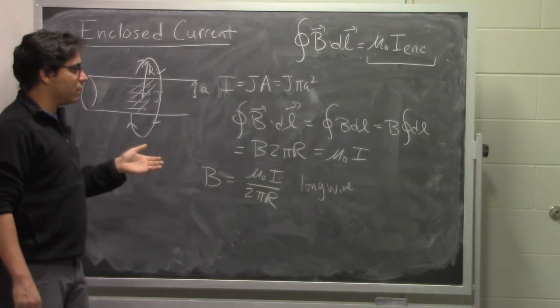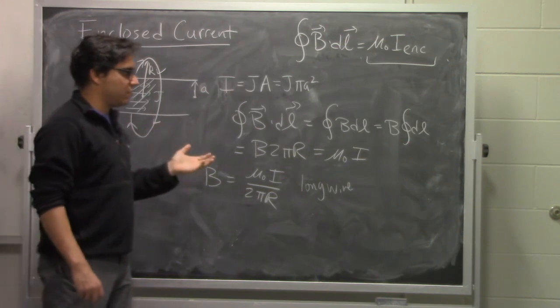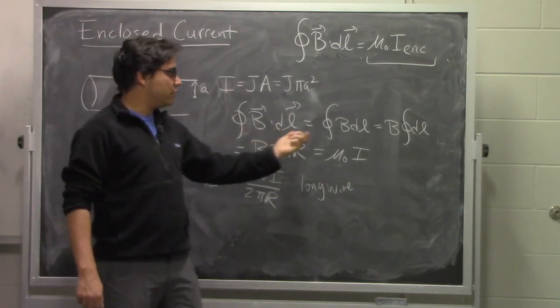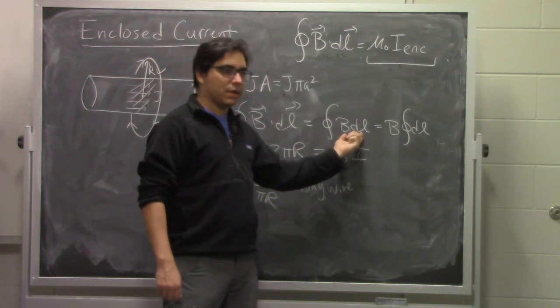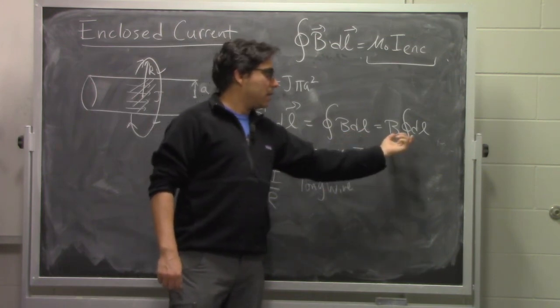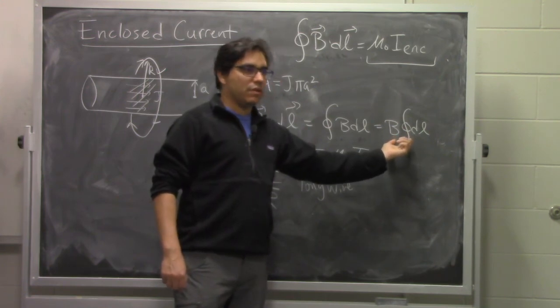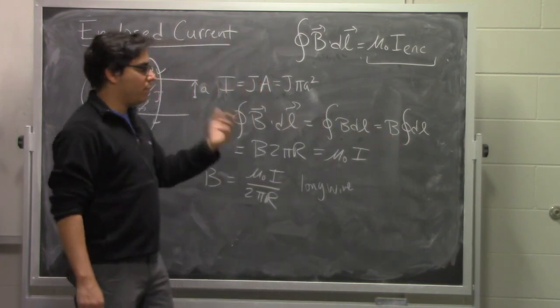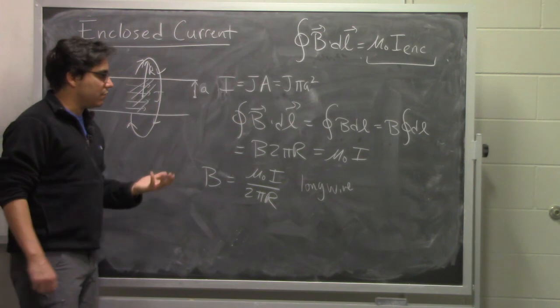When you want to use Ampere's law in all of your problems, the ones that it's appropriate for, are ones where you can argue what this dot product is. That is, you can make it very simple. So you want to pick a loop that aligns with the magnetic field direction, and one where you can argue that the magnetic field is constant, so you can pull it out of the integral and then just calculate the magnetic field times the perimeter associated with where there is magnetic field.